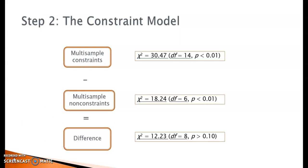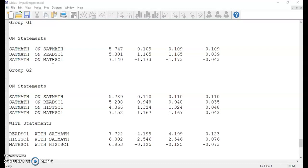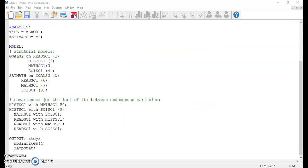For this particular example, we could stop the analysis right here. However, if you would like to explore further, or if there was a significant difference in the chi-square values of the unconstrained and the constrained models, we need to move on to step 3. In step 3, we test the differences between corresponding parameters. A common strategy is to begin with the constrained model, look at the modification indices in the output file to estimate the benefit of releasing each individual equality constraint, and decide what change to make. In our example, the modification indices for both group 1 and group 2 suggest releasing the equality constraint on the path from math self-concept to SAT math. We can release the constraint in the command file by removing the number and parentheses following the path relation.